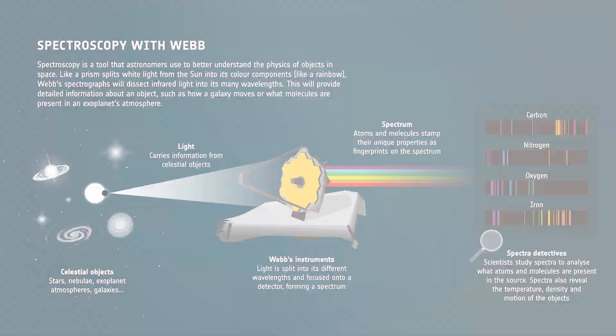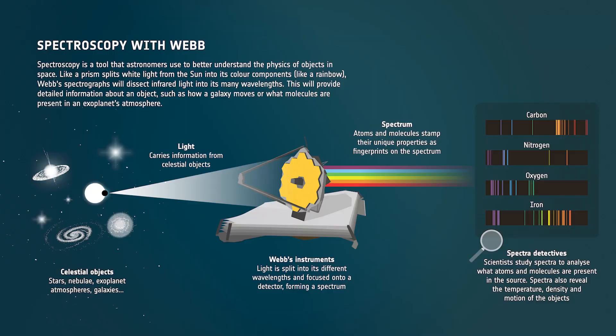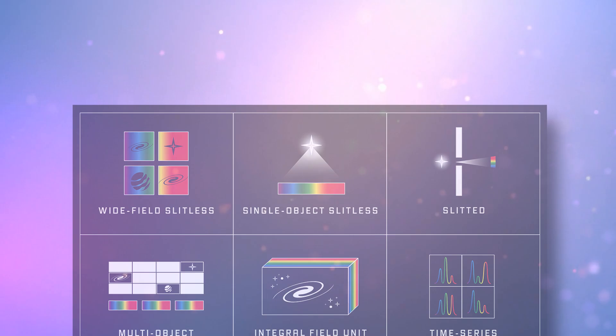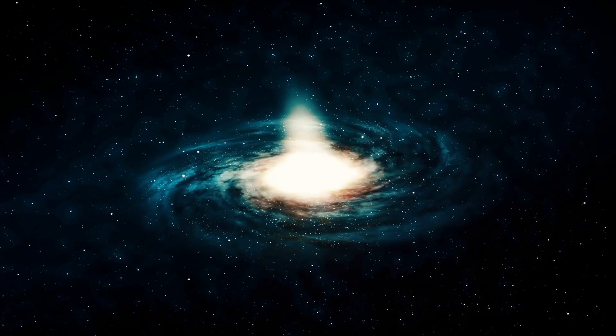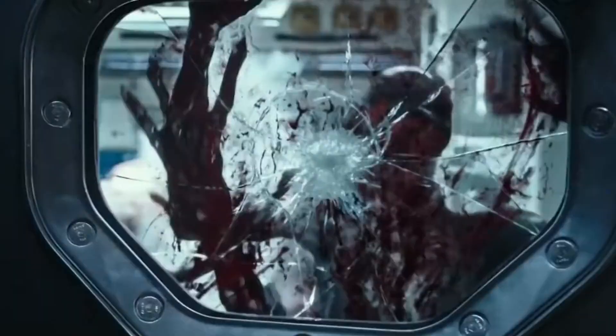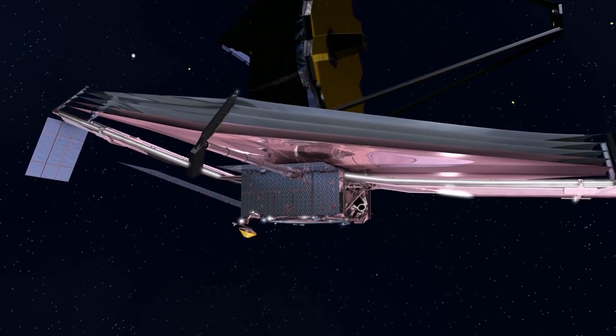Thanks to these tools, Webb can now conduct imaging spectroscopy — it can take a spectrum along with every pixel of the image of various objects in space. What Hubble has failed to do will now be done by Webb. Webb can take clear pictures of exoplanets, clouds, nebulae, galaxies, and stars, and come up with precise information as to whether other planets can support life. It can also succeed in tracing the presence of aliens and aiding astronomers in that pursuit. It will be interesting to see how Webb cracks highly complex mysteries and proves to be a true successor of the wonderful Hubble Space Telescope.